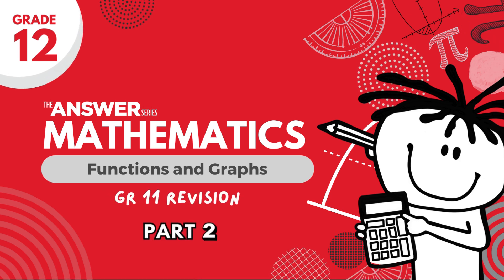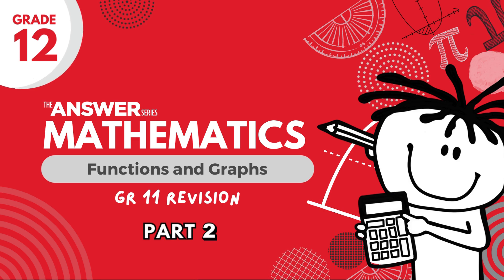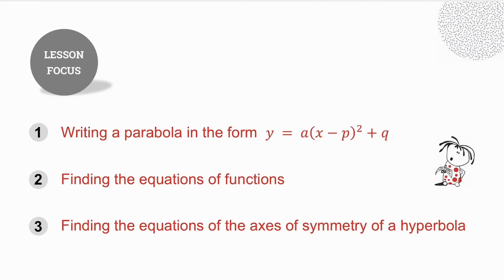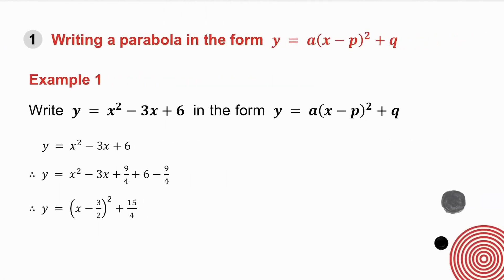Hello Matrix and welcome to the second of 10 videos for grade 12 functions brought to you by the Answer Series. This second video reminds you how to rewrite a parabola in a different form, how to find the equations of various functions, and how to find the equations of the axes of symmetry of a hyperbola. We are going to write a parabola in the form y equals a bracket x minus p, all squared plus q.